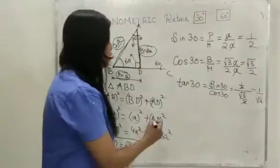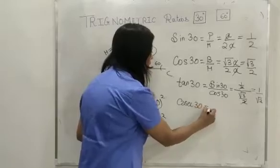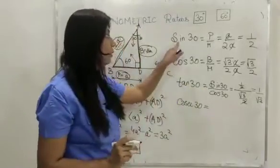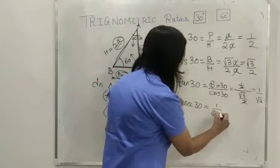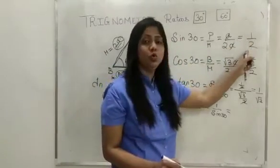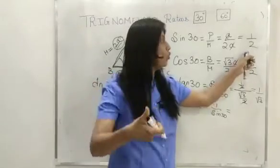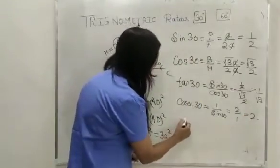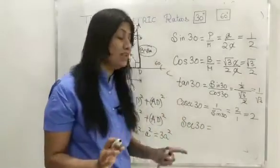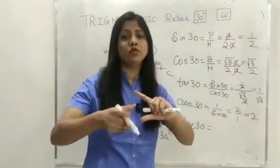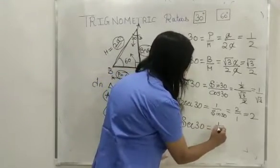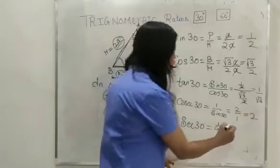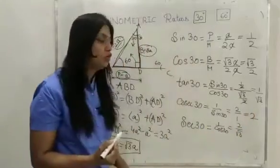Now let's find cosec 30. Cosec and sin are just the reverse of each other, so cosec 30 equals 1 upon sin 30. Since sin 30 is 1/2, cosec 30 is just the reverse, which is 2. Next, sec 30 — sec and cos are also just the reverse of each other, so sec 30 is 1 upon cos 30. Since cos 30 is root 3 over 2, sec 30 is 2 upon root 3.